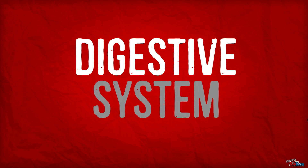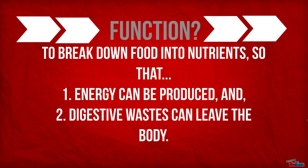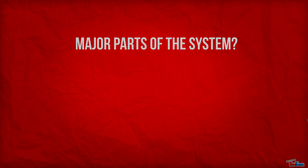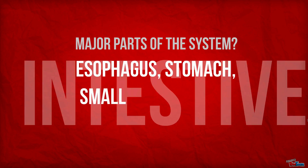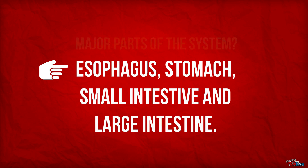The digestive system. Its function is to break down food into nutrients so that energy can be produced and digestive waste can leave the body. The major parts of the system are the esophagus, stomach, small intestine, and large intestine.